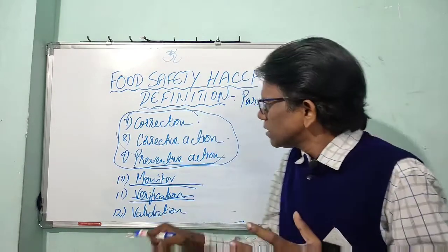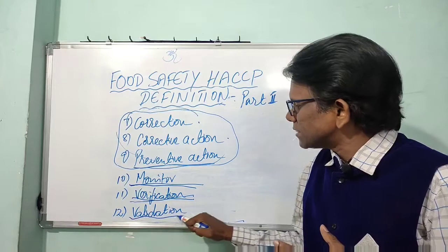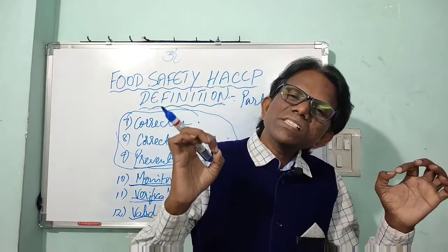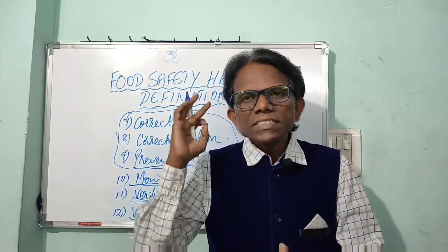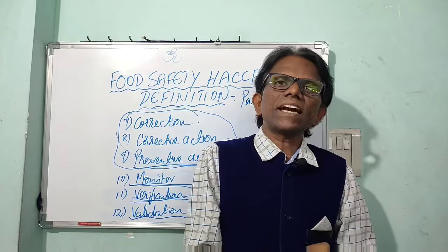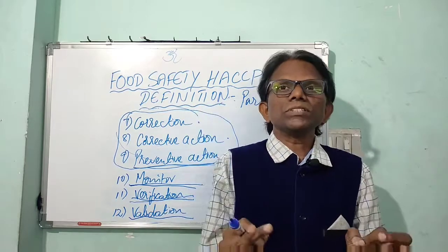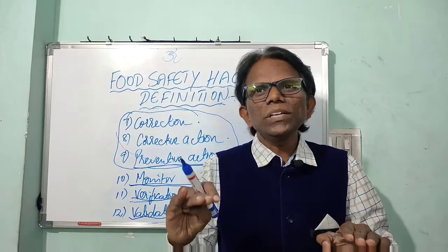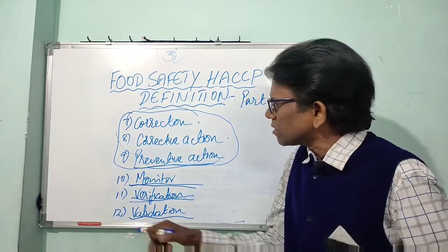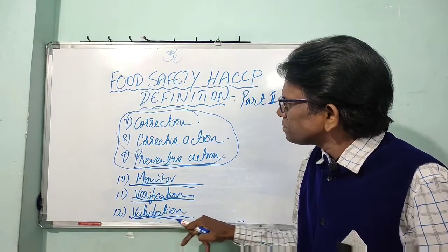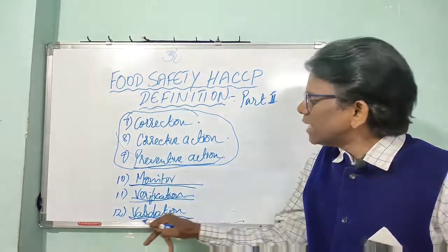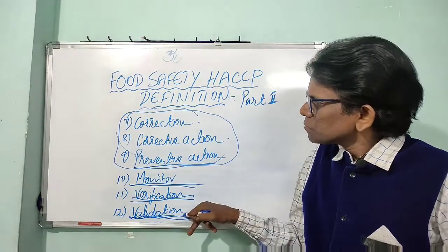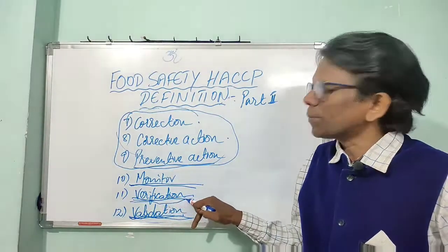What is meant by validation? Validation is obtaining and evaluating scientific and technical data that a control measure or food safety plan is capable of effectively controlling the identified hazard. Validation is done before the start of operations, whereas verification is done after the start of operations.